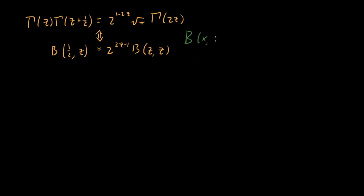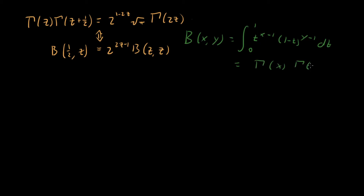The beta function of x and y is equal to the integral from zero to one of t to the x minus one times one minus t raised to the y minus one, dt. And this is equal to gamma of x times gamma of y all over gamma of x plus y. I'll be working mostly with the integral form, so let's get started.